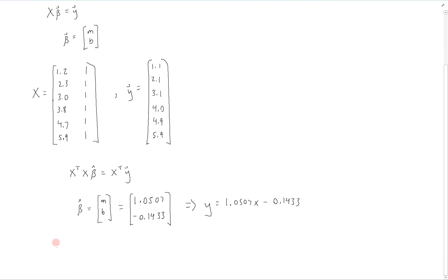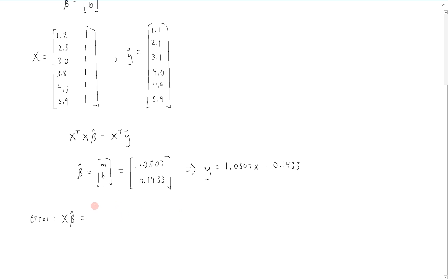Now if you also want to look at the error that's associated with this least squares fit, the error is going to be obtained by looking at X β hat. And we can find that's going to be equal to 1.12 and so on. So this is what we get when we multiply this out. These are the y values that are actually on our best fit line.